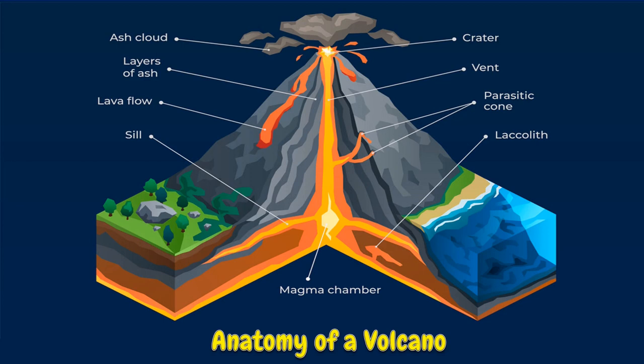A volcano is a rupture in the crust of a planetary mass object such as Earth that allows hot lava, volcanic ash, and gases to escape from a magma chamber below the surface. On Earth, volcanoes are most often found where tectonic plates are diverging or converging, and most are found underwater.